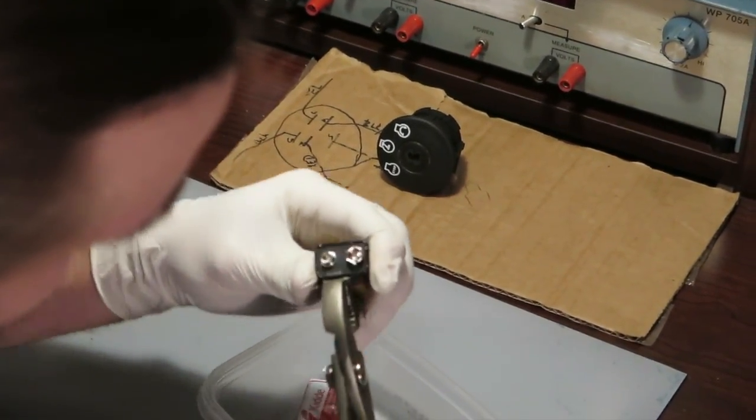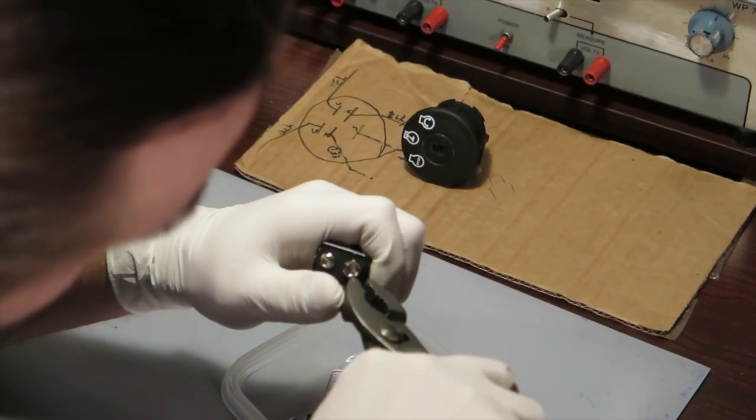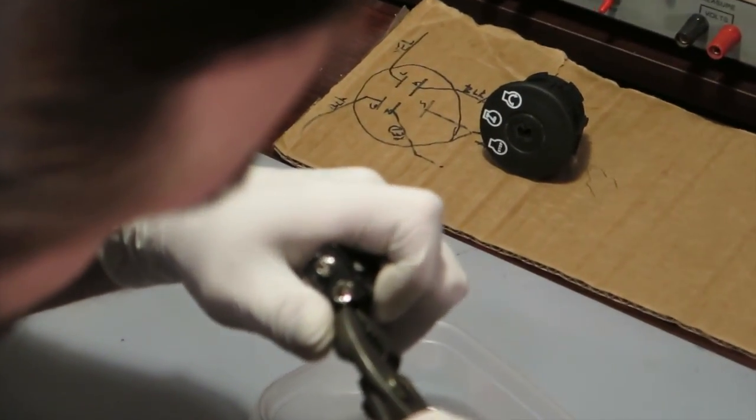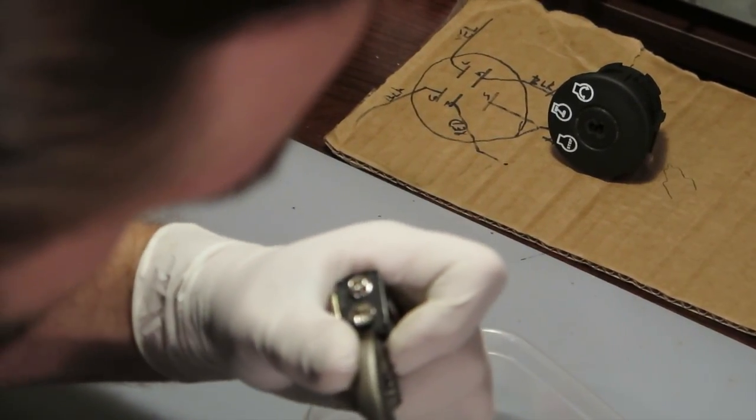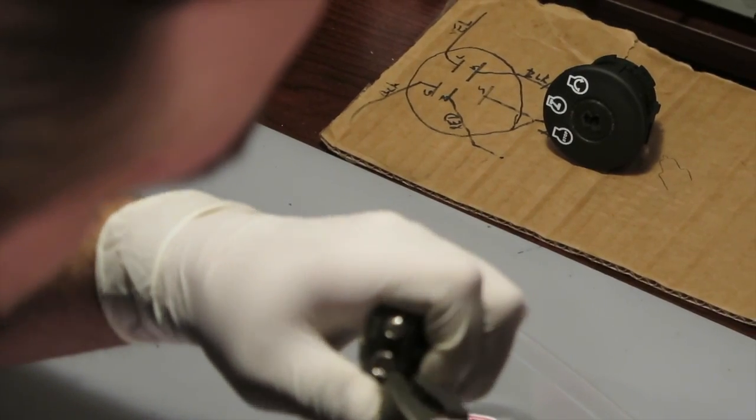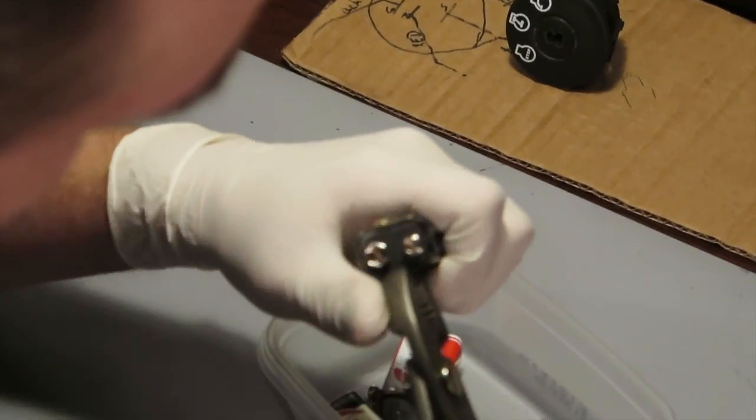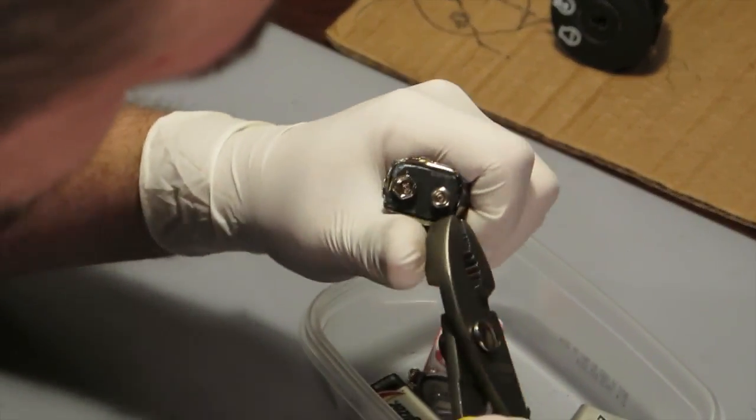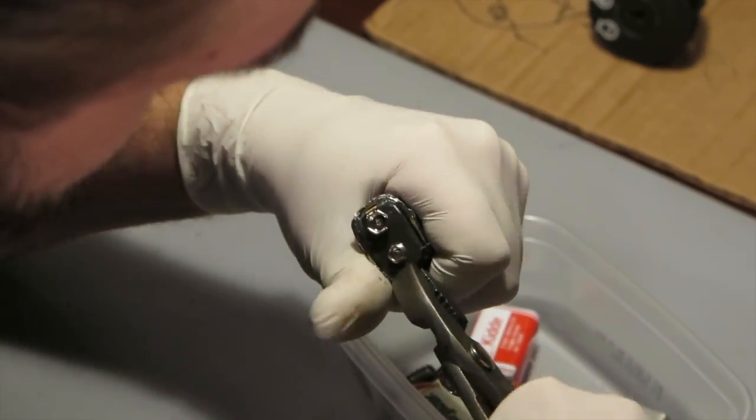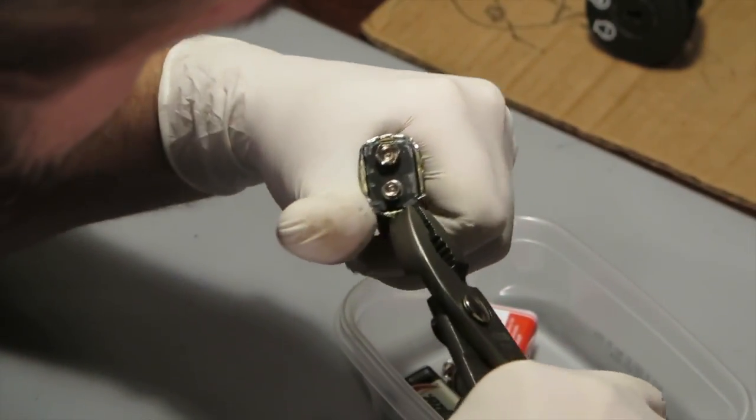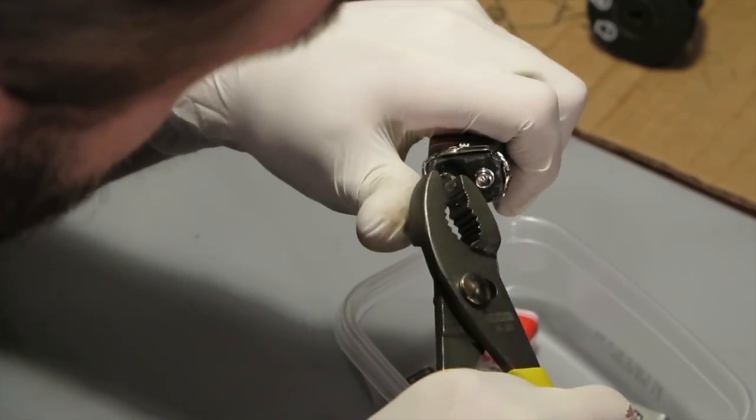All we've got to do is just start bending these out. This perimeter here. You just work yourself around bending this metal out. Be careful not to cut yourself. This is kind of sharp. Just work around, work around. Get it all out of the way.